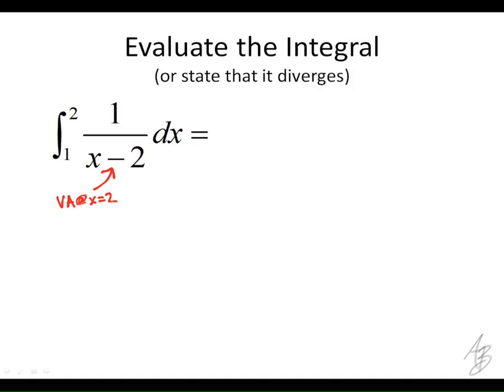So what we have to do is rewrite this with a limit. We're just going to approach 2. We're not going to actually go all the way to 2, but we're just going to approach it and get really close to it.